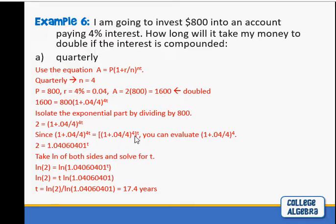You can do the power 4 also, because by exponent rules we can separate the 4 and the t. If we thought of it as the expression to the 4 to the t, you would multiply and get 4t. I'll evaluate 1 plus 0.04 divided by 4, whole quantity to the fourth. Be careful that parentheses are important. Don't round off a whole lot; you'll throw the answer off. We get 2 equals 1.04060401 to the t.